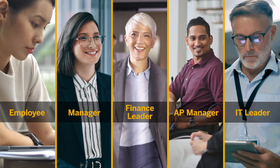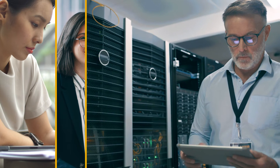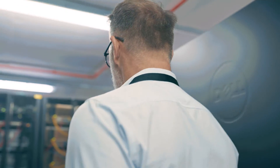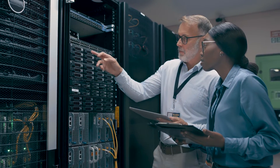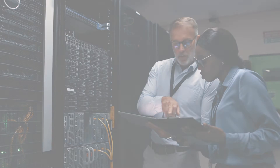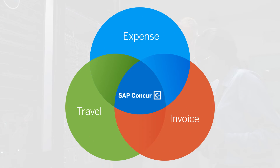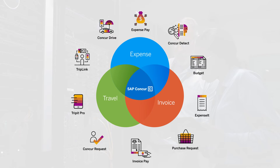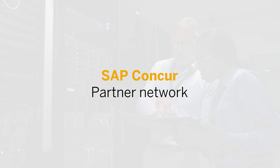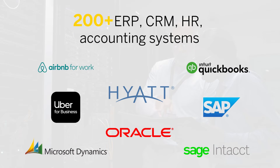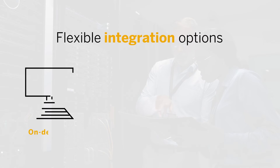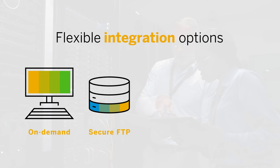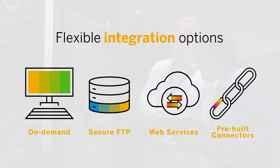We're about to head back to your office, but before we do, let's make one final stop — this time with your IT leader. One of the things that makes Concur Invoice a top choice of IT professionals is that it's part of a fully connected cloud-based spend management platform that can scale with your business as it grows. The platform is further enhanced by our global SAP Concur Partner Network, which includes over 200 of today's best-in-class ERP, CRM, HR, and accounting systems. Your IT leader can choose from a variety of integration methods that can meet, if not exceed, their data handling requirements.